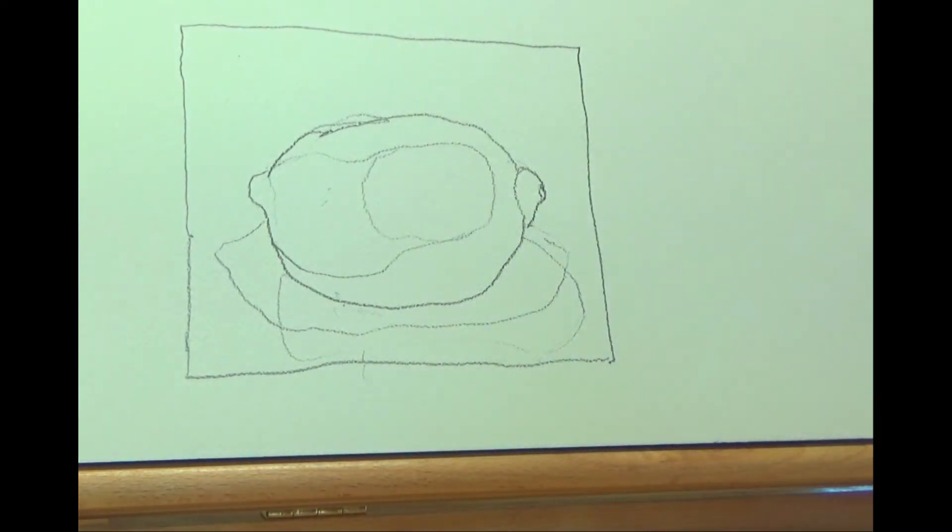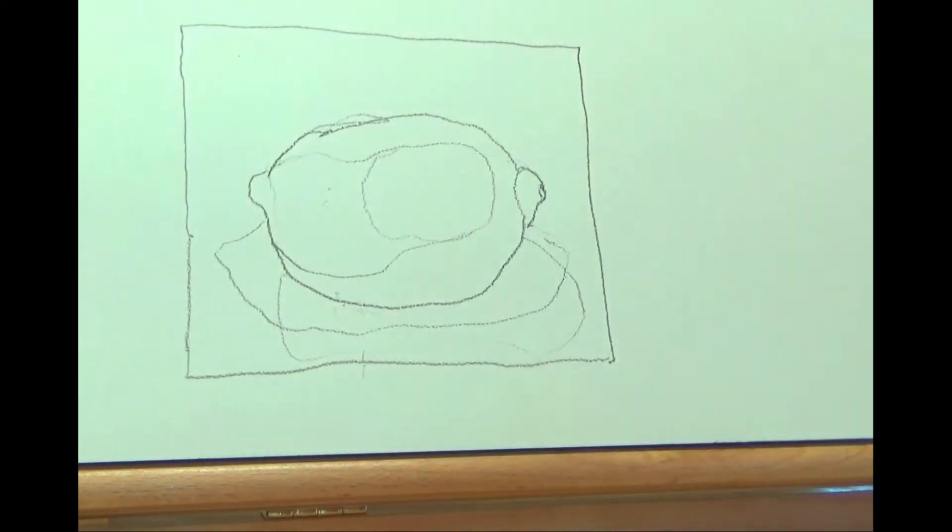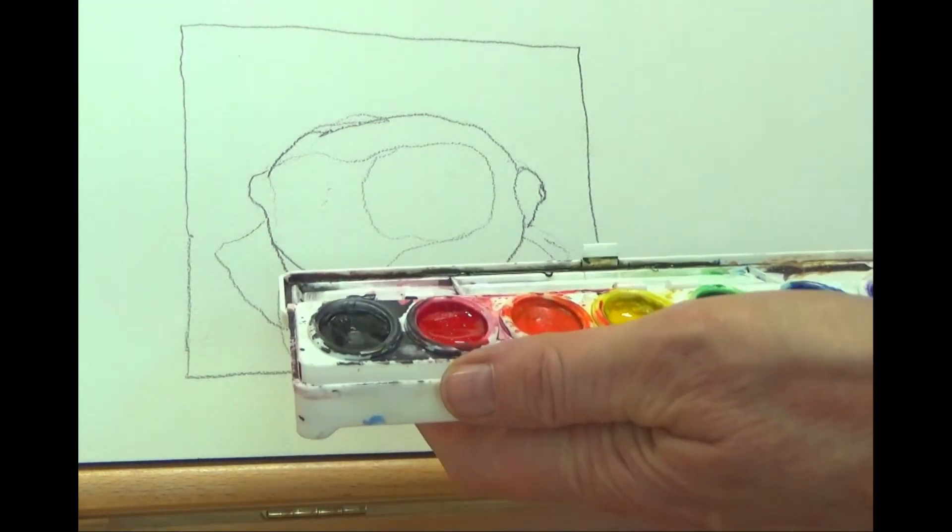You just need your regular watercolors and you need a brush. I'm using a brush that is a number 12, so that's a good size brush. You don't need anything too much smaller. Before you start, the first thing you're going to do, like we've always done, is get a little bit of water inside your trays.